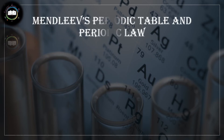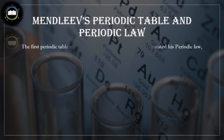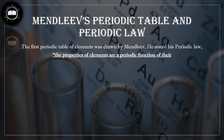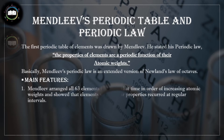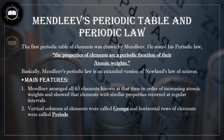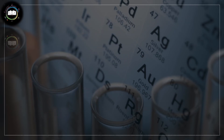In the year 1869, Mendeleev, mainly on the basis of physical and chemical properties, empirically discovered a law known as the periodic law, which he stated as: the properties of the elements are a periodic function of their atomic weights. Mendeleev arranged all 63 elements known at that time in order of increasing atomic weights, placing them in seven horizontal lines called periods and in eight vertical columns called groups.